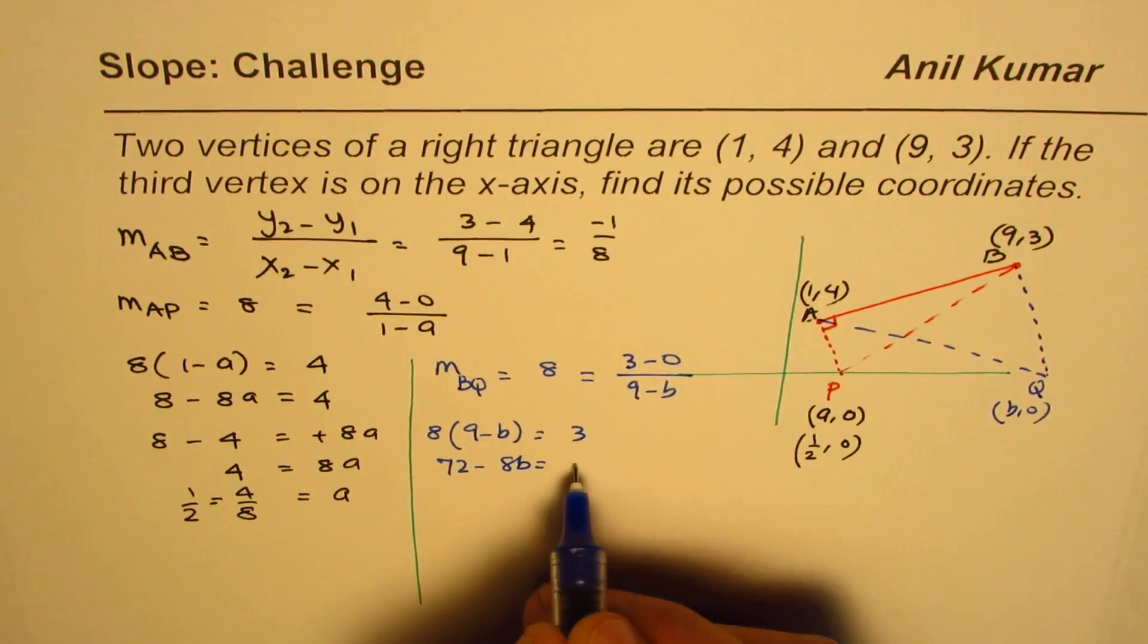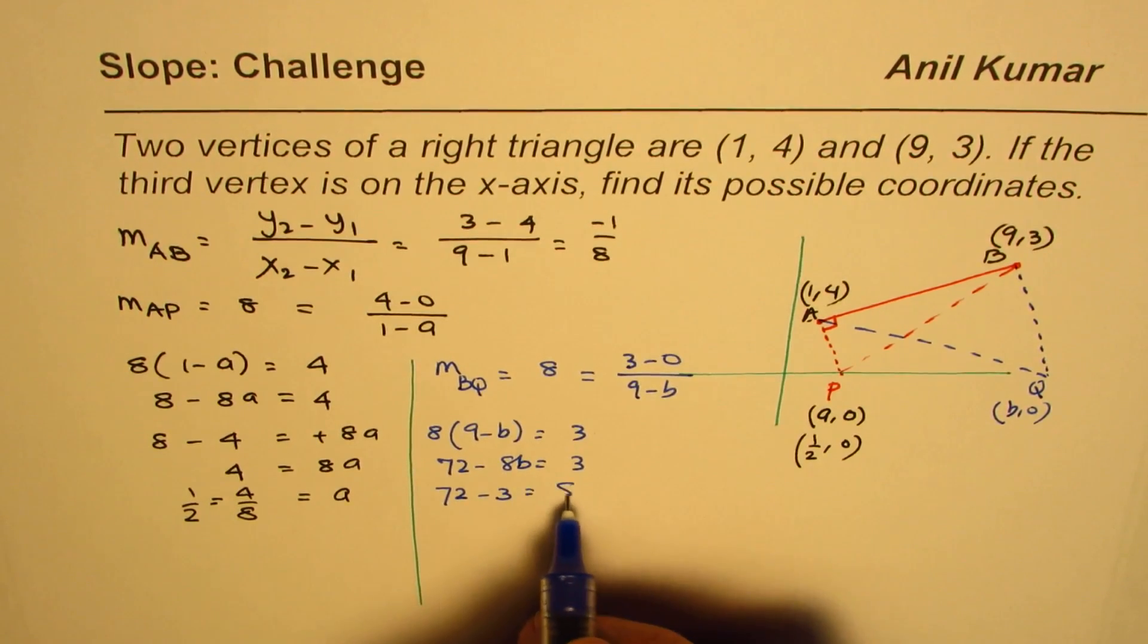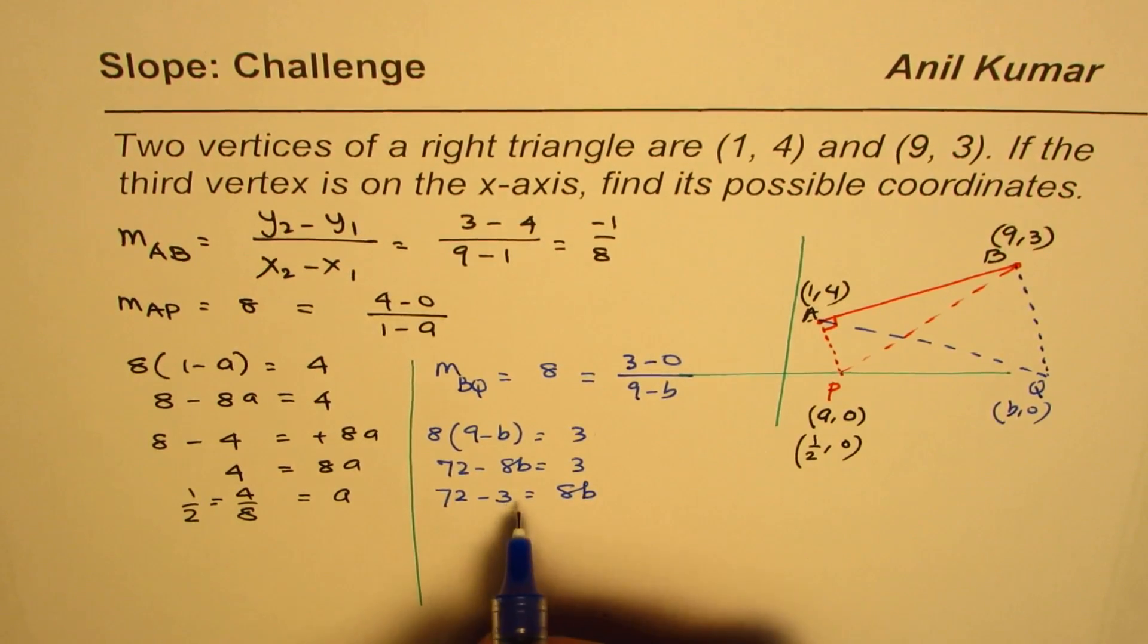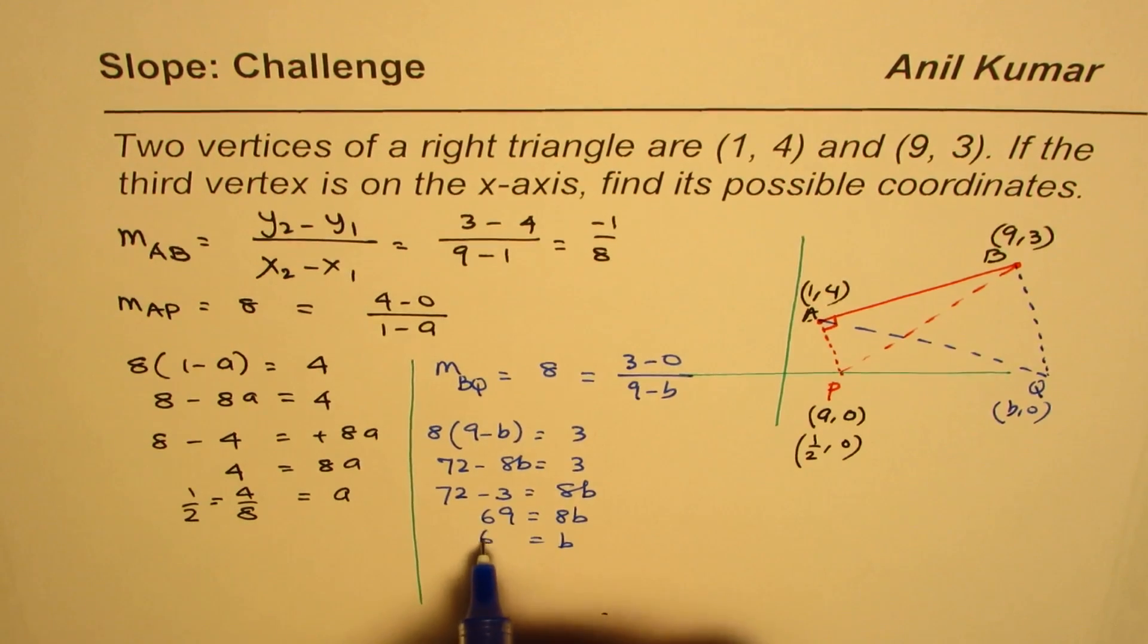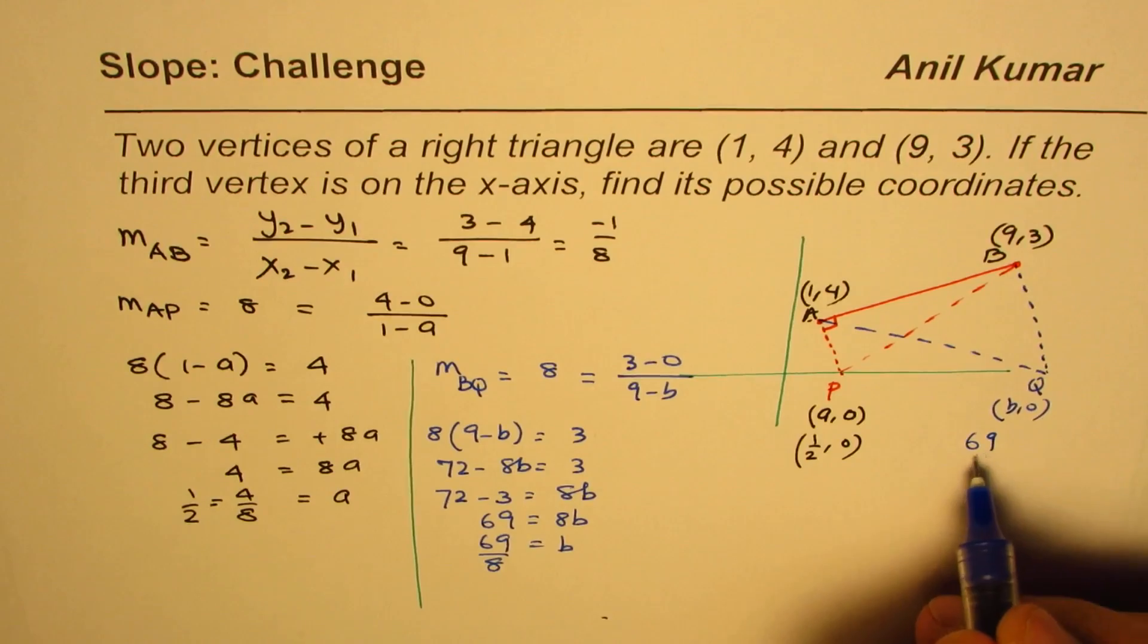So 72 - 3 equals 8b. 72 minus 3 is 69 equals 8b, or b equals 69/8. So in that case this point will be (69/8, 0).